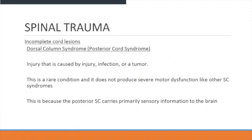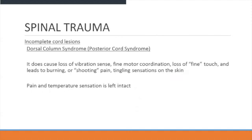Dorsal column syndrome is caused by infection or tumors and is a rare condition that does not produce severe motor dysfunction like central cord syndrome. This is because the posterior central cord carries primary sensory information to the brain. It causes loss of fine motor coordination, loss of fine touch, and leads to burning or shooting pain and tingling sensation of the skin, while pain and temperature sensation are usually left intact.